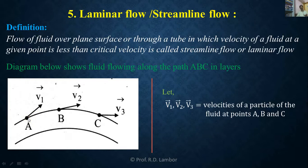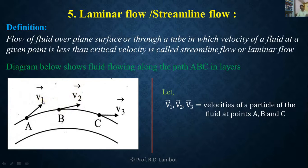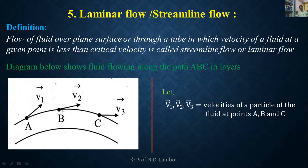Each new particle arriving at point B will have the velocity equal to V2, and that velocity's direction is along the tangent drawn to the curve ABC at point B. This velocity V2 may or may not be equal to V1 in magnitude, because the streamline path is curved. If the streamline were straight, then velocities at A and B might be the same.